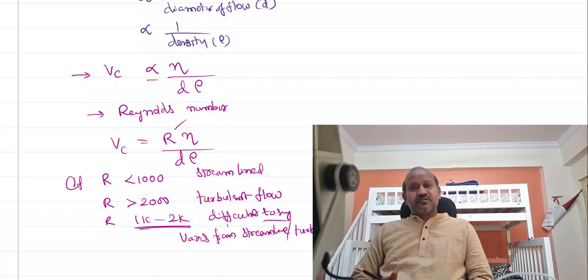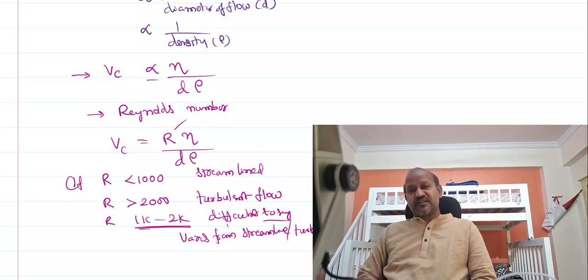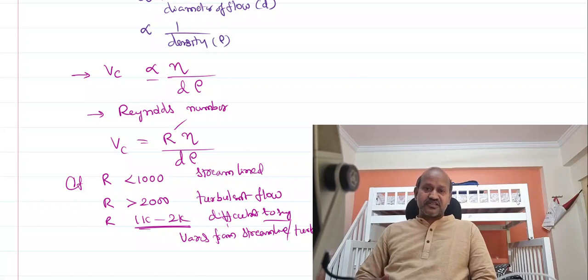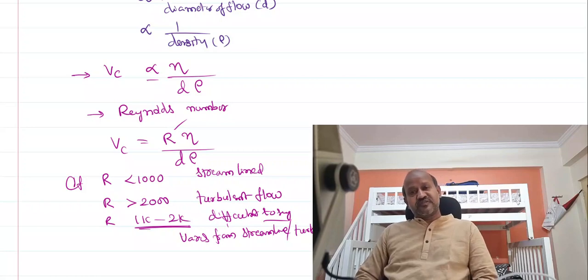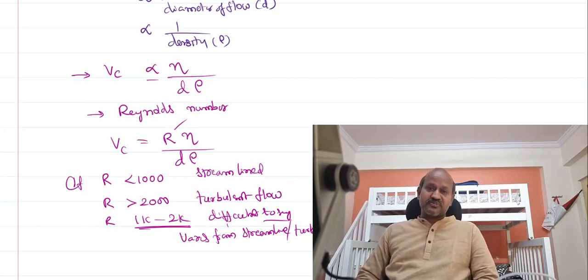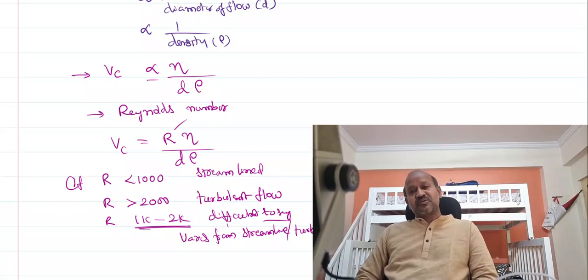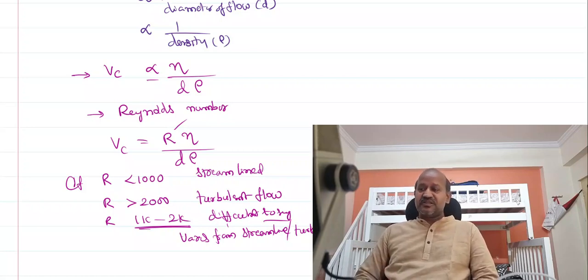To summarize this video: critical velocity is the velocity at which fluid flow converts from streamlined to turbulent. It depends on the coefficient of viscosity (directly proportional), the diameter of the fluid flow (inversely proportional), and the density of the fluid (inversely proportional). Combining these gives a constant called the Reynolds number. Less than 1000 → streamlined flow; more than 2000 → turbulent flow; between 1000 and 2000, the flow alternates between the two.